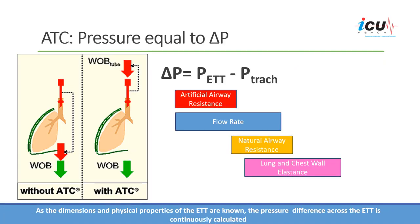To understand this concept in more detail, you need to understand that the pressure at the proximal part of the tube is higher than the pressure at the trachea. The difference between the proximal pressure and the distal pressure is the pressure required to overcome the artificial airway resistance, which is related to the artificial airway plus the flow rate. The tracheal pressure must overcome the flow rate, the natural airway resistance, and the lung and chest wall elastance.